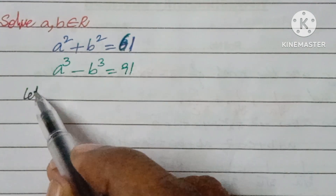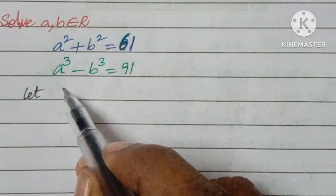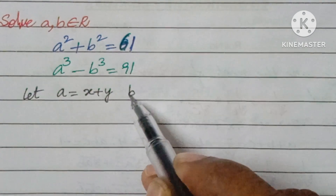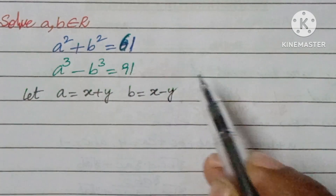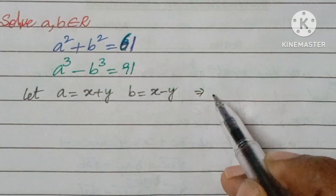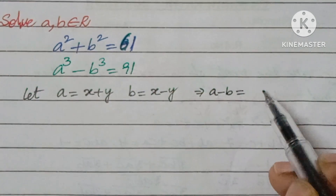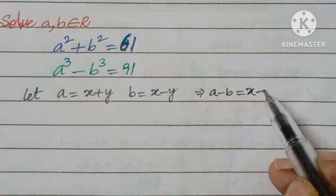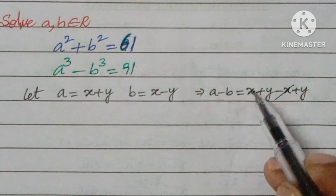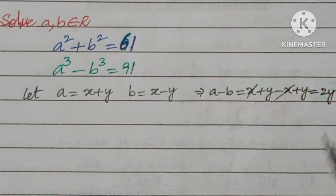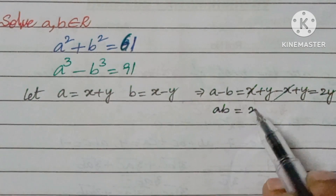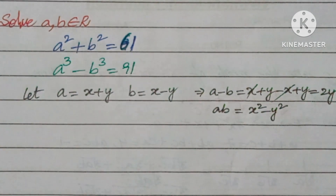The substitution we take is: let a = x + y and b = x - y. From this, a - b = (x + y) - (x - y) = 2y. And the product a·b = (x + y)(x - y) = x² - y². We will use this result afterwards.